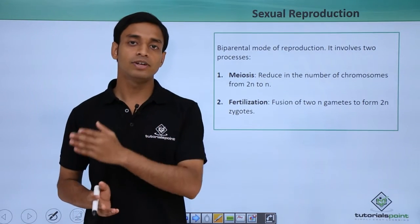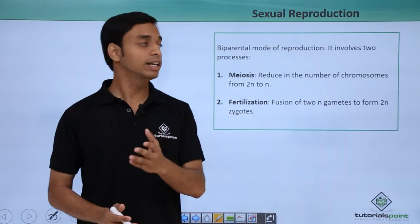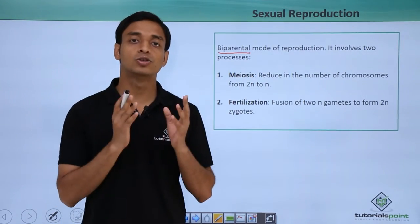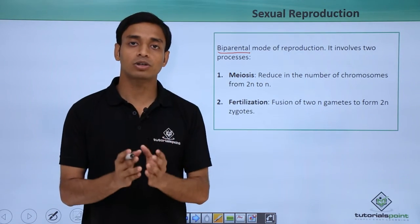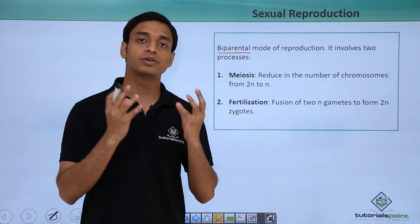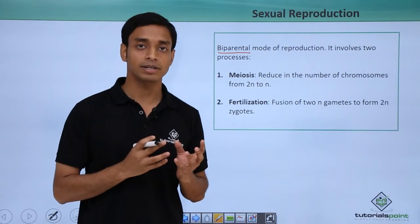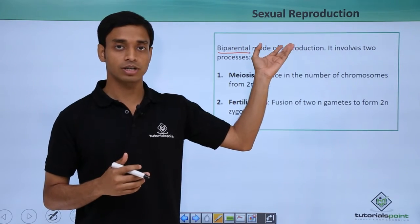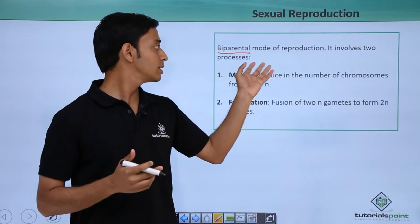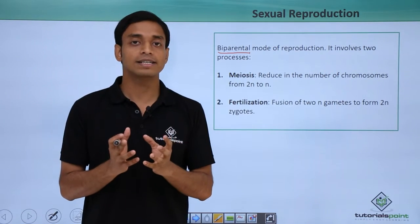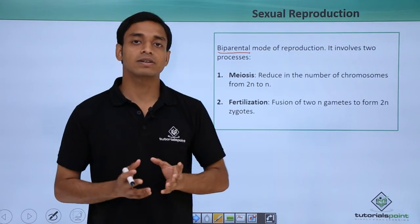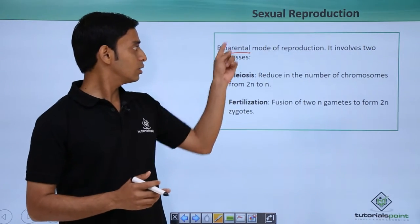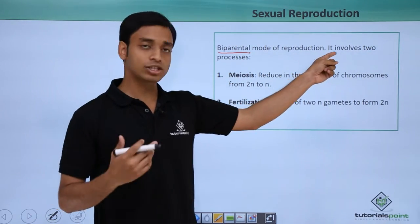Now let us look into the sexual mode of reproduction. This is different from asexual reproduction because it is biparental — it requires two parents. A very important event here is the fusion of male and female gametes. Also, sexual reproduction does not produce clones; instead, some variable characteristics are achieved.